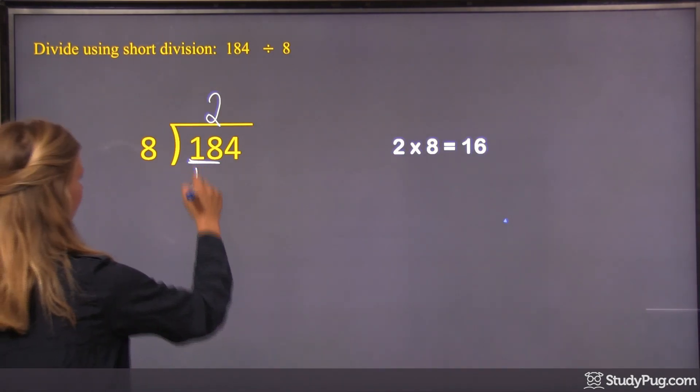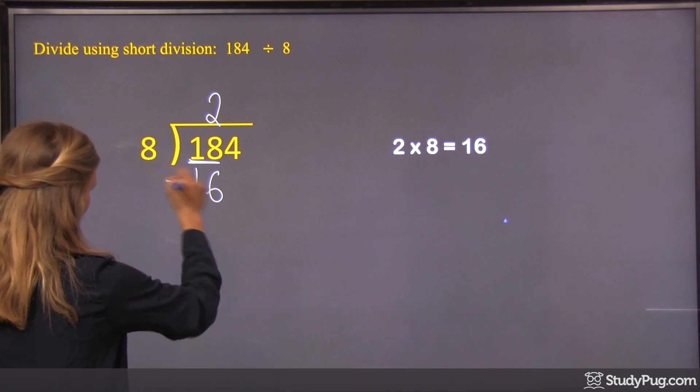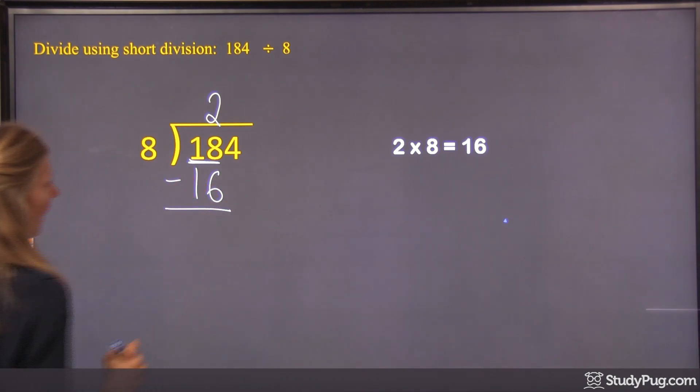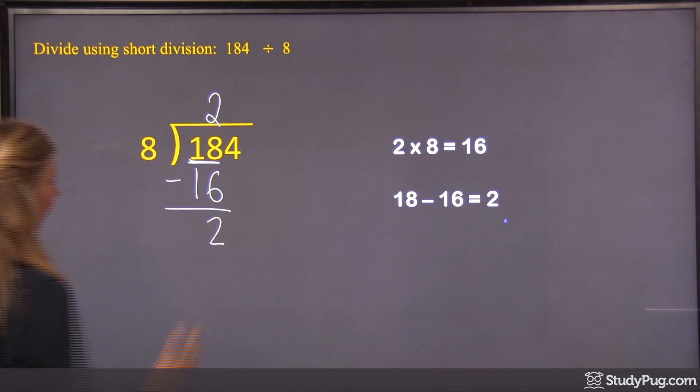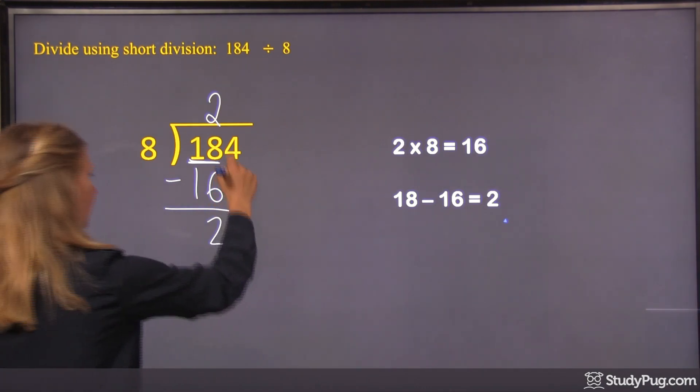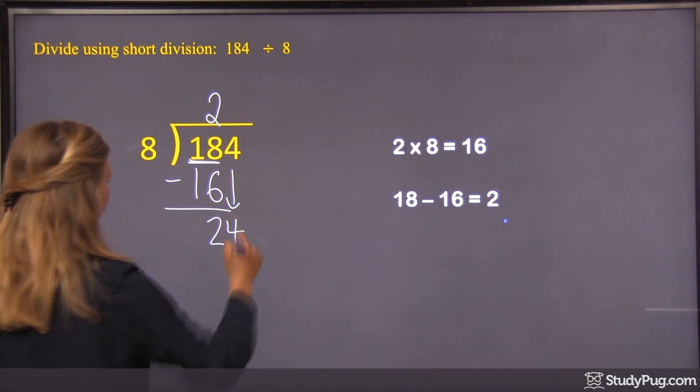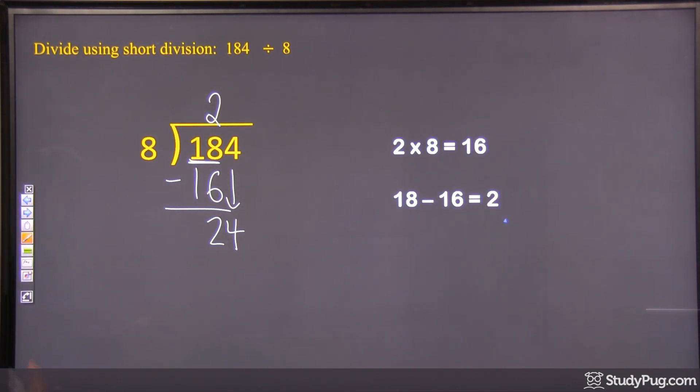And we would write the 16 here. And then we'd do the subtraction. And 18 minus 16, we'd get 2. So we'd write the 2 here. And then we'd bring down the 4, right? And we would get 24. So then our next step of division would be 24 divided by 8.